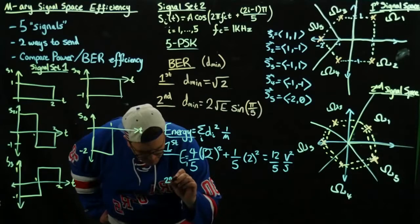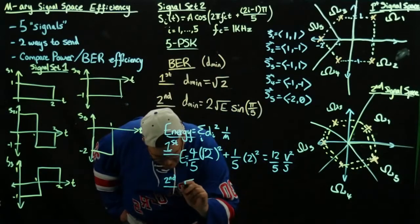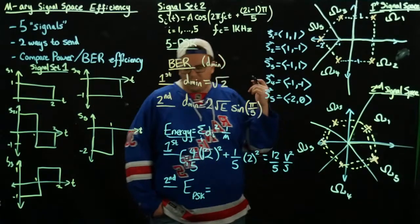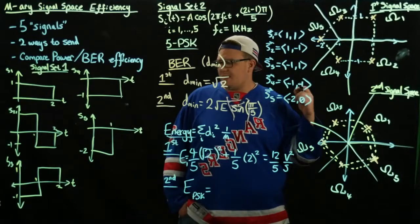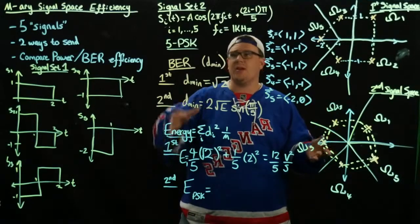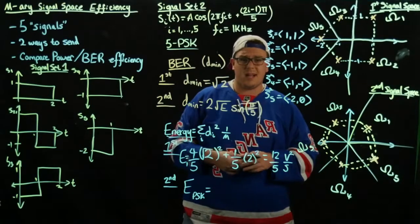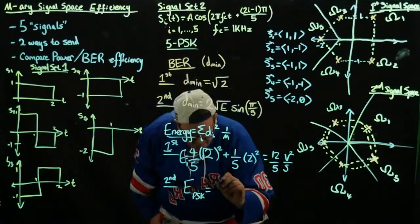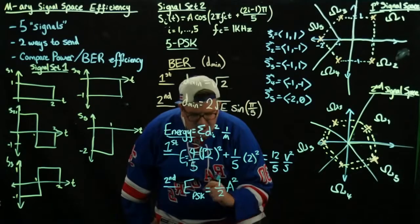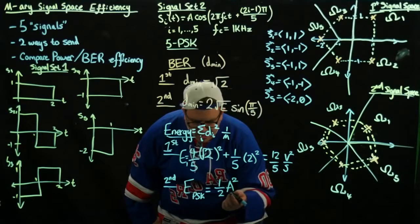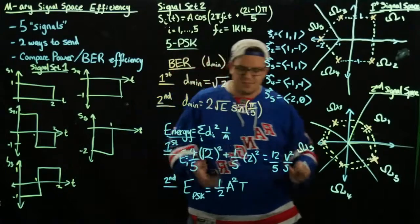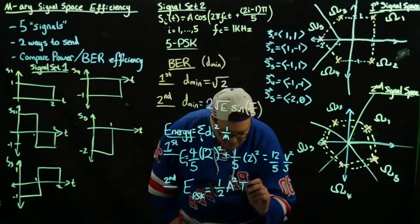For the second one, the PSK system, there is actually a formula based on the root mean square of a sinusoid. The power of a sinusoid is one half A squared. You then multiply by the period T of the sinusoid to get the energy, because power times time is energy. So the average energy for PSK is one half A squared times T.